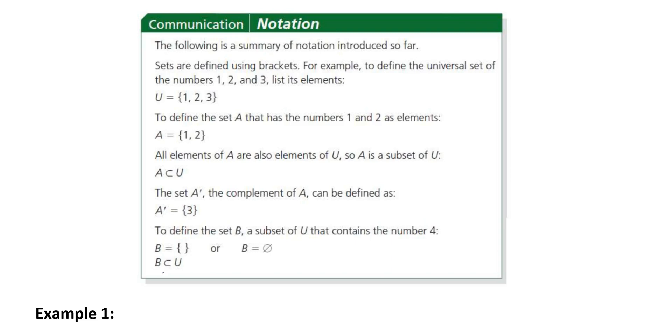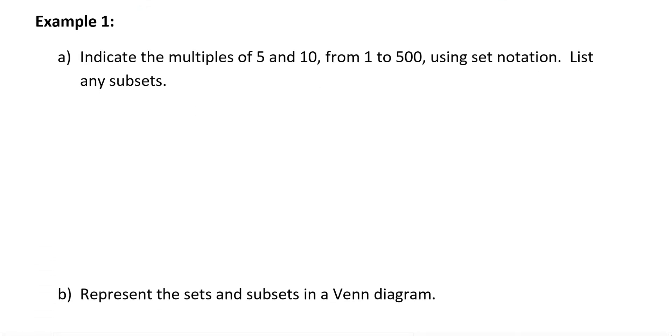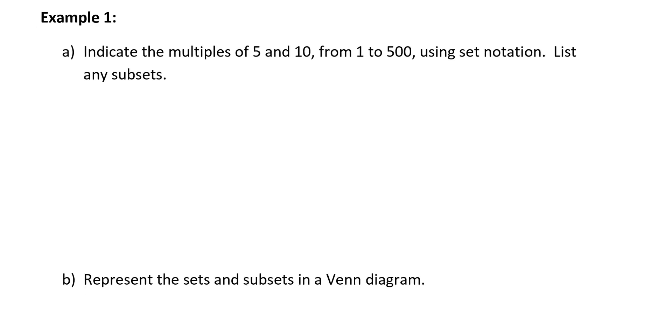So, let's take a look at the first example. It says, indicate the multiples of 5 and 10 from 1 to 500 using set notation. List any subsets. So, if I want to define my universal set, I can define my universal set as U equals, well, they're saying from 1 to 500 would be all of the elements. So, 1, 2, 3, and then indicate that we would go all the way to 499, 500. And it's understood that all of those values are in there. That's my universal set.